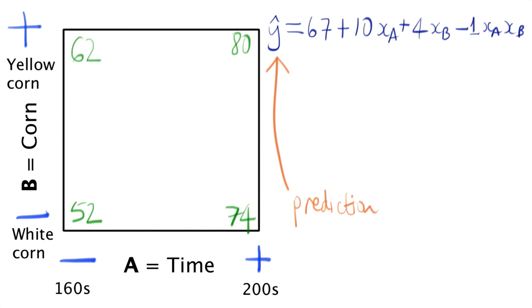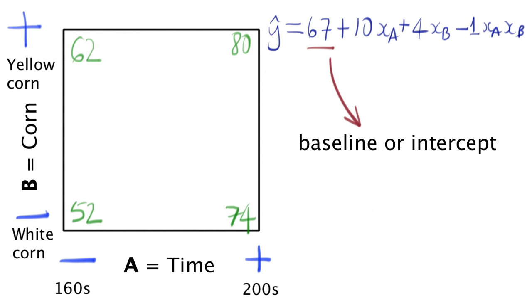The predictive model has four parameters: 67, 10, 4, and minus 1. 67 was the baseline amount, the average of all four experimental outcomes. We also refer to that as the intercept, and you'll see why in a minute.